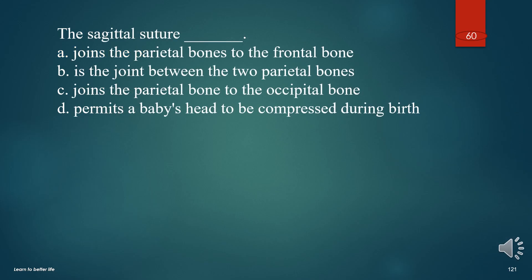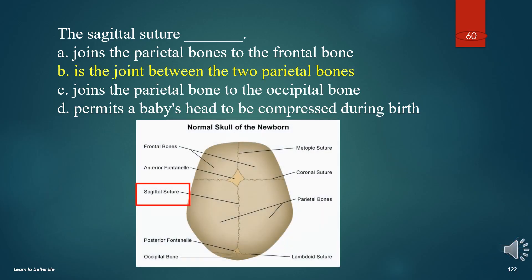The sagittal suture: A. Joins the parietal bones to the frontal bone. B. Is the joint between the two parietal bones. C. Joins the parietal bone to the occipital bone. D. Permits a baby's head to be compressed during birth. The answer is B. Is the joint between the two parietal bones.